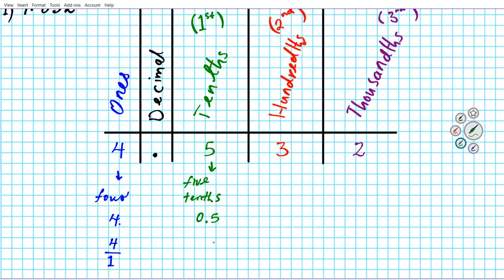How do you write it as a fraction? Just think about the name: tenths. Five tenths — that's how you write it as a fraction: 5 divided by 10. Just like one half is 1 divided by 2, five tenths is 5 divided by 10. So there are the name, decimal, and fraction forms for the tenths digit.